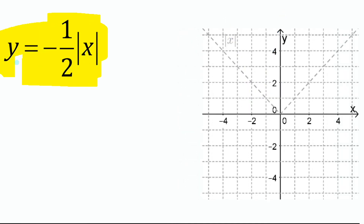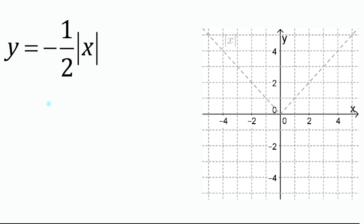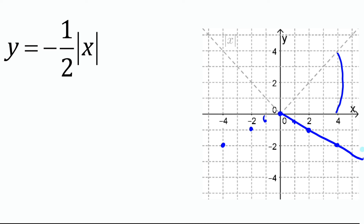For y equals negative one-half absolute value of x, two things are happening: a vertical reflection and a vertical compression by a factor of one-half. The graph opens downward and all y values are half as much. A point that would be two units up is now one unit down; a point at one is now a half unit below the axis. The vertex is invariant and stays in place.